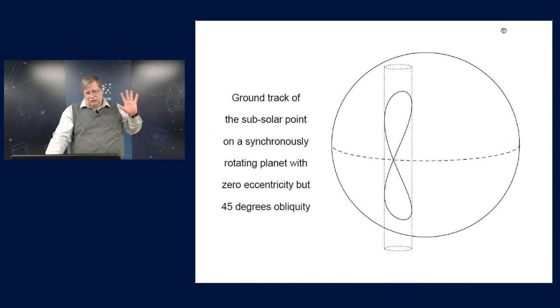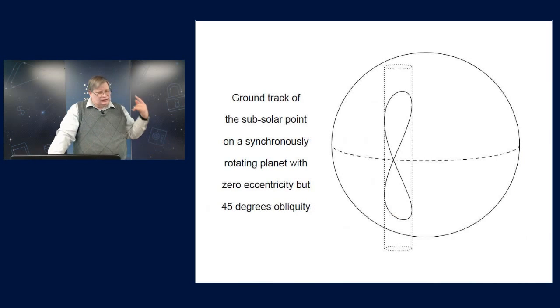That's a non-resonant planet. Something similar happens if you have a planet in one of these spin-orbit resonances. For example, if you're in the synchronous resonance, the sun moves up and down across the equator, but it stays on the same side of the planet. This shows that situation for a case of a 45 degree obliquity, but this is a synchronously rotating planet, no eccentricity.